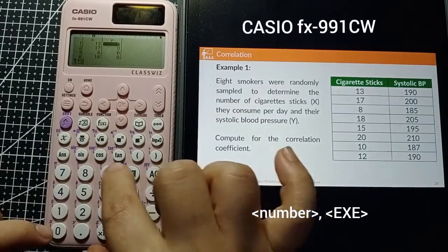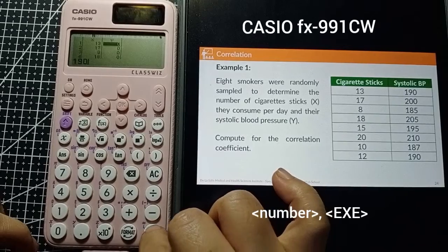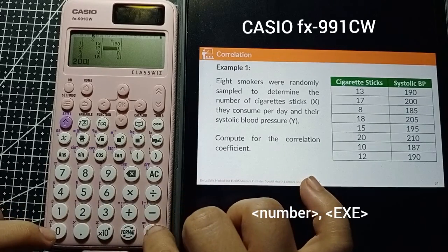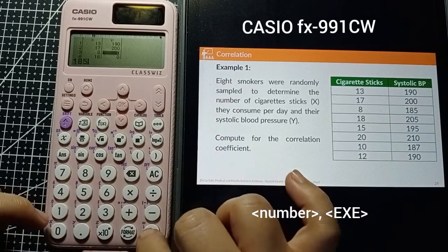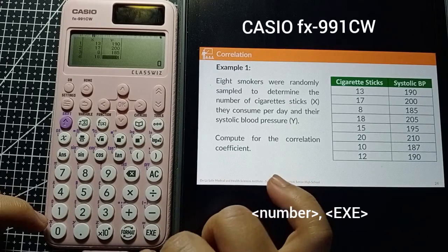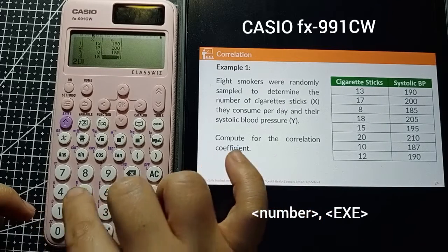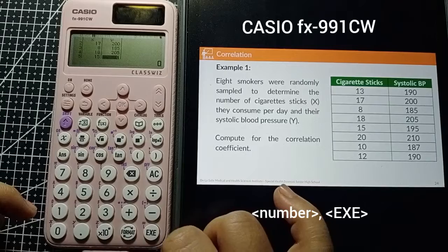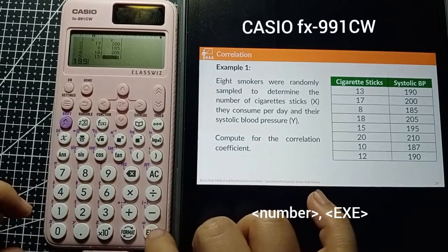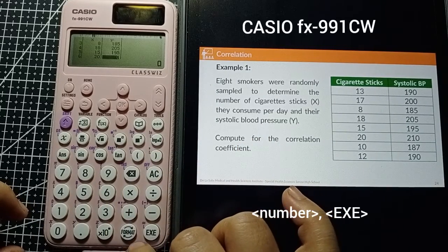Once you're done with the X column, proceed with the Y column. Make sure you're entering the correct numbers. You can review your entries using the arrow keys.